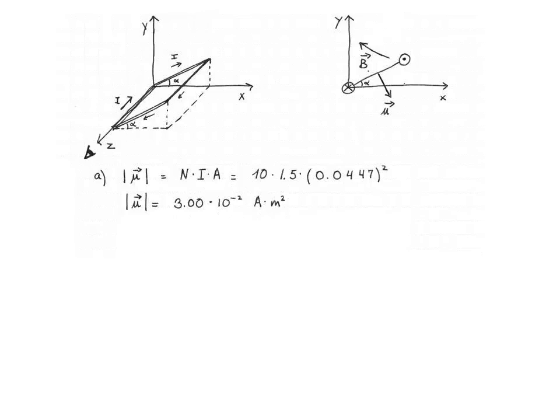Now let's find the direction. The coil is inclined at 26.5 degrees from the x-axis — I've redrawn that angle alpha above the horizontal in the middle of the loop. The magnetic moment is 90 degrees away from the loop, so the angle between the magnetic moment and the x-axis is 90 minus 26.5 degrees. That angle must be negative because it's clockwise from the x-axis, making the direction minus 63.5 degrees.